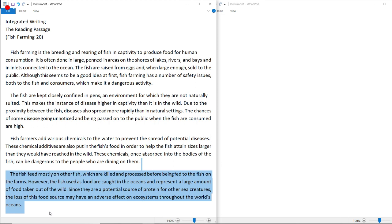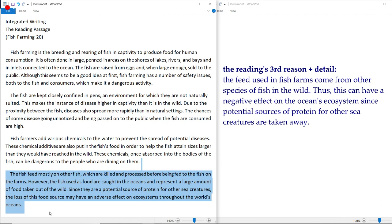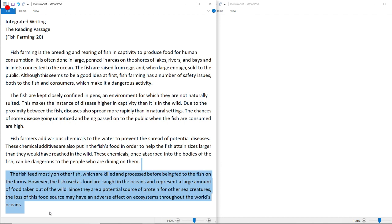All right, so the reading passage's third main point is that fish farmers utilize other fish to produce the feed for the fish in their farms. But this method of feeding the fish can have a negative effect on the ecosystems throughout the world's oceans, since it basically means that food sources for other sea creatures are being taken away. Okay, all right. Now that we're done with the reading passage, let's listen to the lecture.